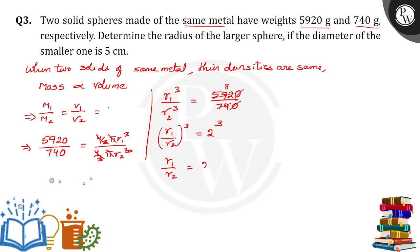8 can be written as 2 power 3. So r1 by r2 is equal to 2. R1 is equal to 2 times R2.